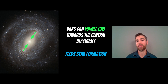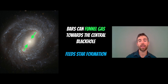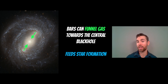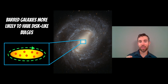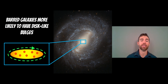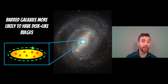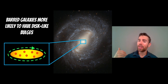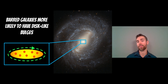In funneling gas into the central parts, the bar also feeds star formation there, because you're feeding gas into the central region and stars form from it. The consequence is that barred spiral galaxies are more likely to have disc-like bulges in their centers — the gas being fed in, combined with star formation and net rotation, produces that disc-like central structure. So barred spiral galaxies are more likely to have these sorts of structures in their center. Thanks for watching, and if you enjoyed this you can check out some of the other videos.